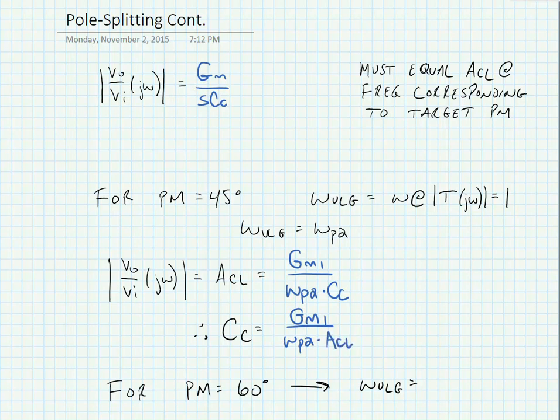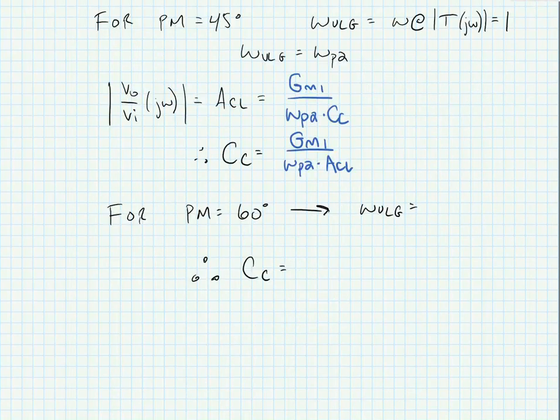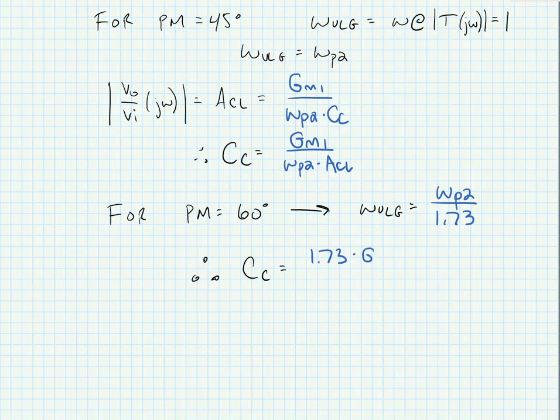Now we can adjust for different phase margins. So for instance for a phase margin of 60 degrees omega unity loop gain would be equal to omega p2 divided by 1.73, and then we could say that our compensation capacitor was equal to 1.73 times gm1 divided by omega p2 times a closed loop.